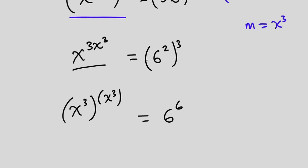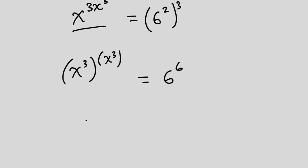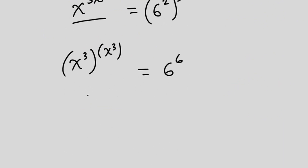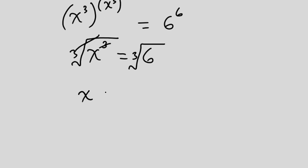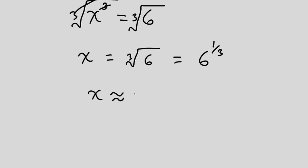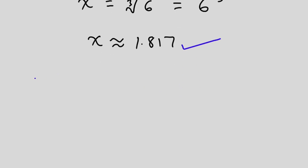Now it is clear that the equation is of the form a to the power a equals b to the power b, so we're going to have x to the power 3 is equal to 6. Now we are looking for x, so we're going to take the cube root on each side of the equation. Because this is a cube root it is not necessary to include plus or minus. We get x is equal to the cube root of 6, which is the same as 6 to the power 1 over 3. Using a calculator, x is approximately equal to 1.817.